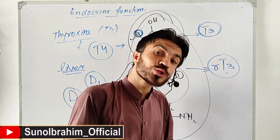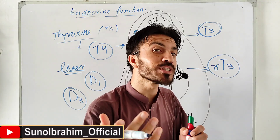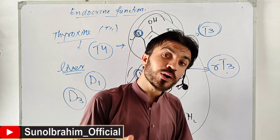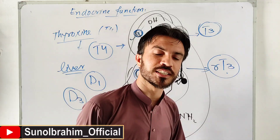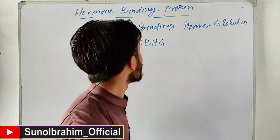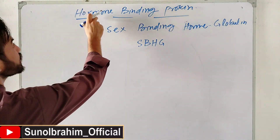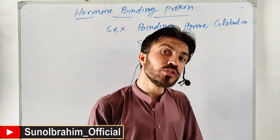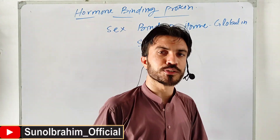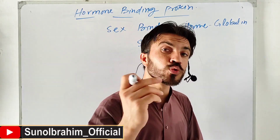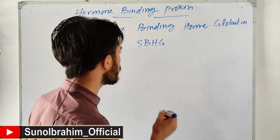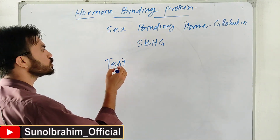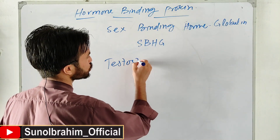The liver performs this T4 to T3 conversion. For example in hypothyroidism, thyroid secretion is low - the liver helps activate what is available. The liver also produces hormone-binding proteins - specific proteins that bind to hormones. For example, testosterone is a very important hormone in men.